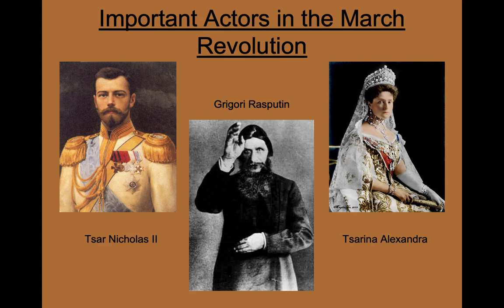One of their children had a condition called hemophilia, which is a blood clotting disorder, which made it very dangerous for the child to be injured. Rasputin was able to treat the hemophilia and gain the confidence of Tsarina Alexandra. Rasputin was very distrusted by the Russian people — there were all kinds of myths and urban legends about him having secret powers, and ultimately the people saw him as being too influential over the king and queen.